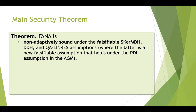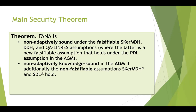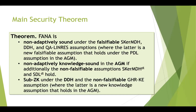Let us state the main security theorem. FANA is non-adaptively sound under the following falsifiable assumptions: SKRMDH, which is the assumption behind BLS; DDH, which is the assumption behind the functional SSP; and a novel QA-LINRES assumption. This latter assumption is a new falsifiable assumption that holds under the BDL assumption in the algebraic group model. FANA is also non-adaptively knowledge sound in the algebraic group model under two additional non-falsifiable assumptions, and it is subversion zero knowledge under DDH and a new non-falsifiable knowledge assumption, which is also proved secure in the algebraic group model.